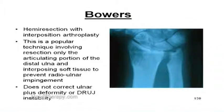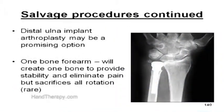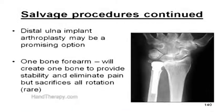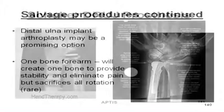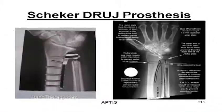The distal ulnar implant, as depicted on slide 140, may be another promising option. The one-bone forearm technique will create one bone to provide stability and eliminate pain, but sacrifices all rotation, so this technique is rarely performed. Slide 141 depicts the Schecker distal radial ulnar joint prosthesis, which is a promising device.